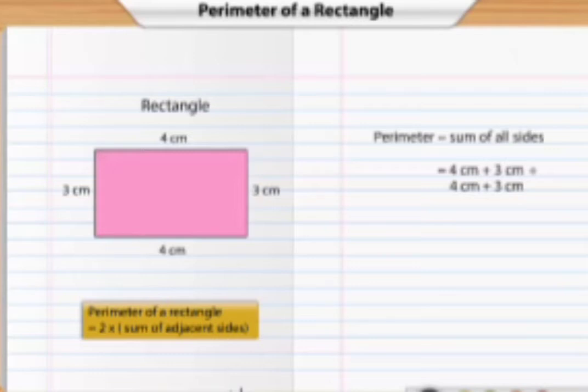The perimeter can be calculated as 2 times the sum of 4 cm and 3 cm. That is 2 times 7 cm, which equals 14 cm.